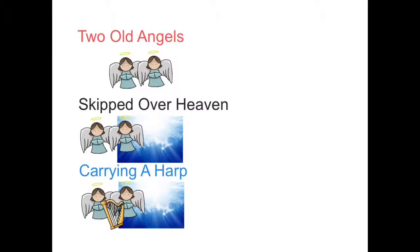To help us find missing sides and angles in any right-angled triangle, we need to learn three ratios, three formulae which involve fractions. And to do that, we learn a little mnemonic. Two old angels skipped over heaven carrying a harp.